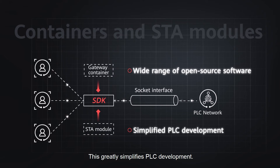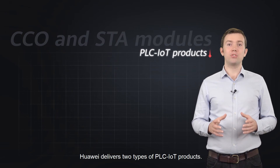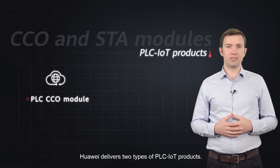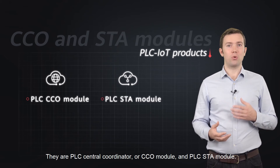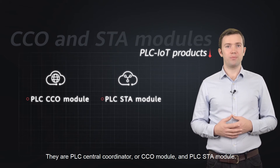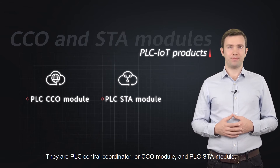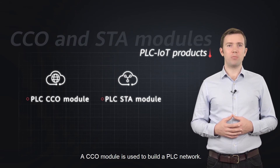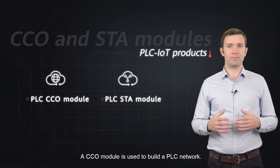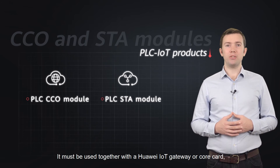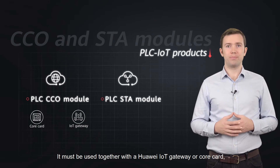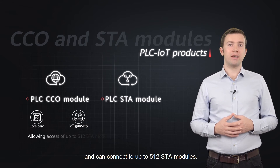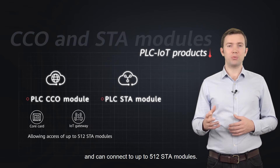Huawei delivers two types of PLC IoT products: the PLC central coordinator, or CCO module, and the PLC star module. A CCO module is used to build a PLC network. It must be used together with a Huawei IoT gateway or core card, and can connect up to 512 star modules.